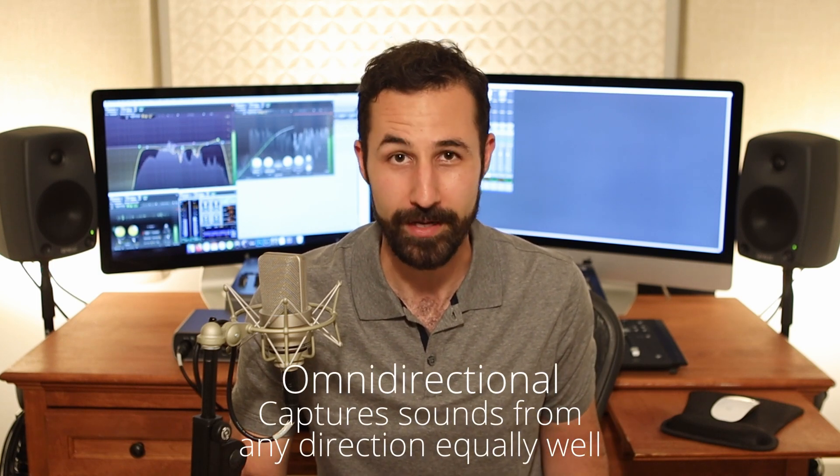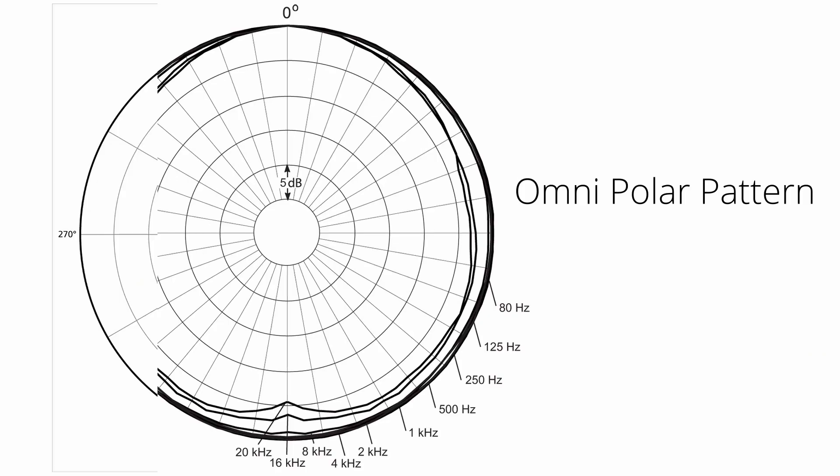The most basic polar pattern is an omnidirectional one, where it picks up sounds equally well in every direction. You don't have to worry about which way the mic is facing — you can just set it up and it'll capture whatever happens to be around it. Omni mics are great for recording backgrounds and ambiences from city traffic to wind, and also as lavalier mics, because you want talent to be able to turn their head any direction and have their voice sound exactly the same. They're also really useful in music recording if you've got an instrument that sounds nice in a particular room — you can place an omnidirectional mic right next to an instrument and it'll capture the natural reflections in the room around it.